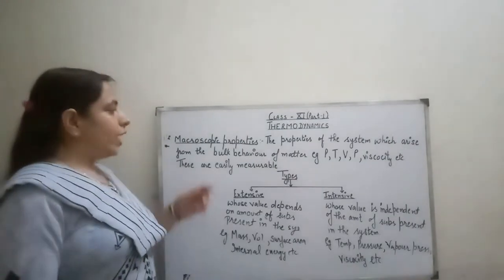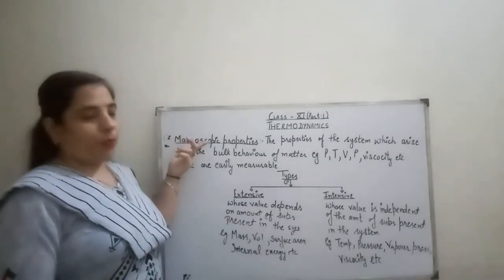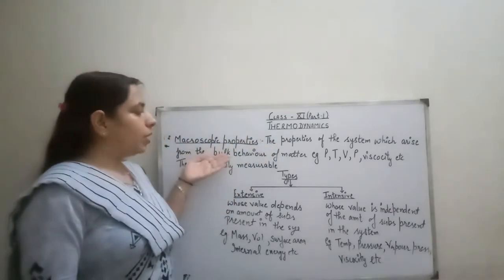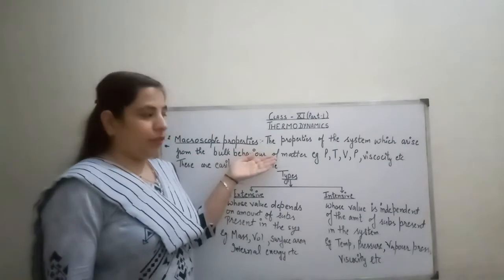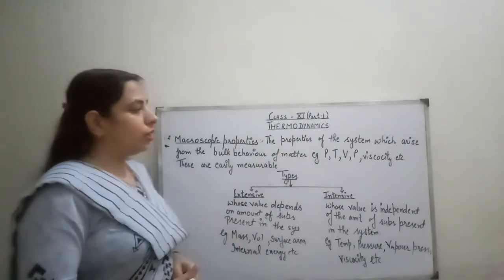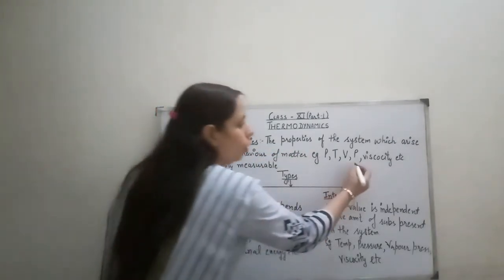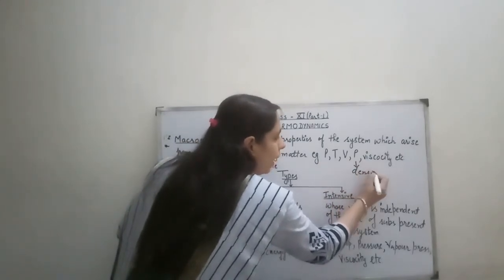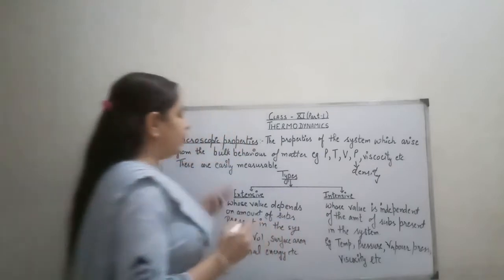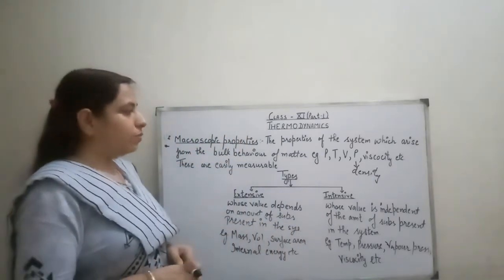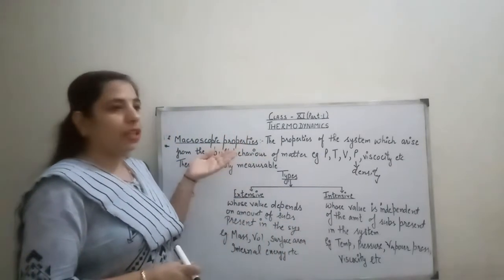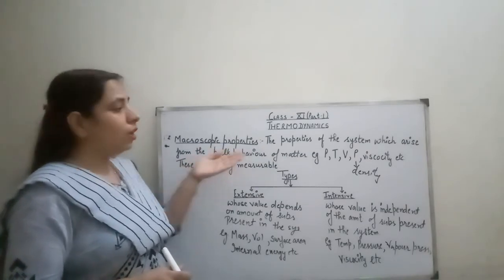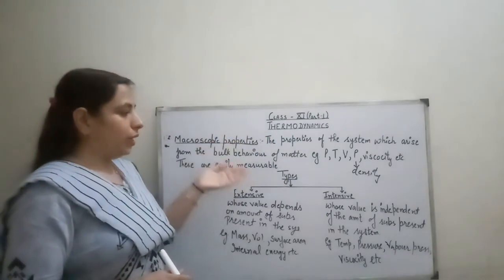Our next property is macroscopic properties — the properties of the system which arise from the bulk behavior of matter. For example, pressure, temperature, volume, density, viscosity, etc. These are easily measurable properties when matter is present in large quantities.